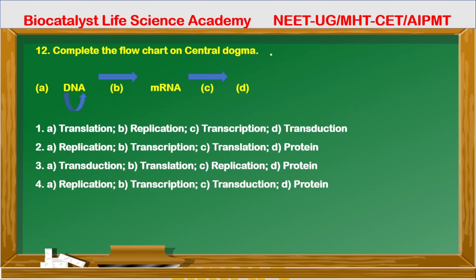Question 12: Complete the flowchart on the central dogma. A, B, C, and D are given to complete. If DNA forms DNA, the process is replication. DNA to mRNA is transcription — RNA synthesis occurs. From mRNA, the process is translation, which produces protein and enzymes. So A is replication, B is transcription, C is translation, and D is protein. The correct option is second.